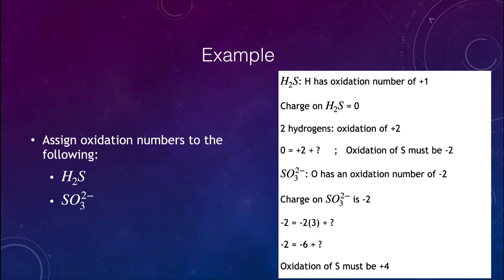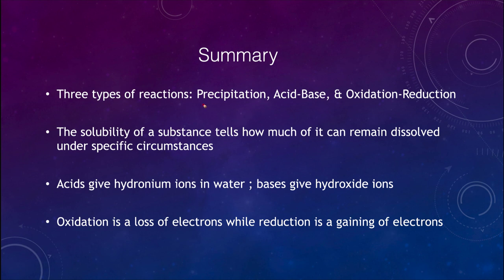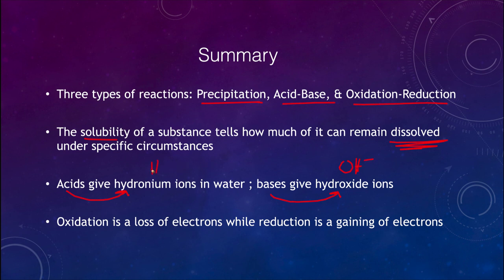To summarize, we looked at three types of reactions: precipitation, acid-base, and oxidation-reduction. Solubility tells us how much of a substance can remain dissolved. Acids give hydronium ions (H3O⁺) and bases give hydroxide ions (OH⁻). Oxidation is a loss of electrons and reduction is a gain of electrons, and we can calculate oxidation states using established rules. That concludes this lecture on classifying chemical reactions — we'll be back next time for another topic in physical science.